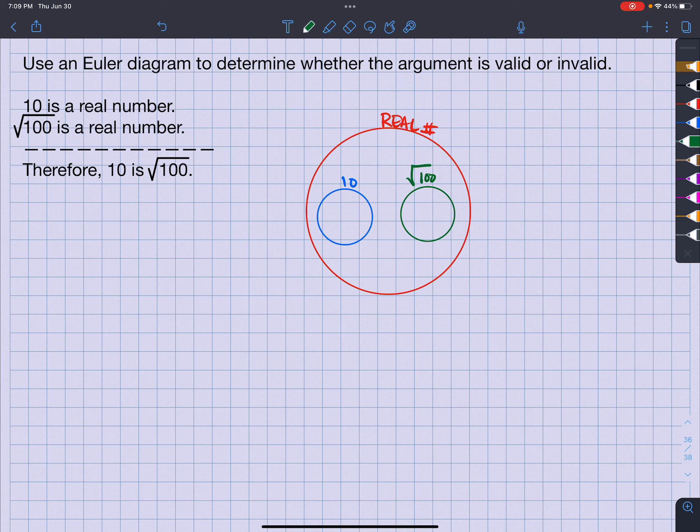It says, therefore, 10 is a square root of 100. Well, the problem is that there is no connection here whatsoever. So, therefore, this statement is going to be invalid.